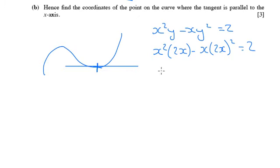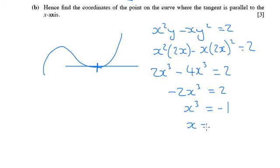So we've got 2x cubed there, take away, this is going to be a 4x cubed equals 2. So that's negative 2x cubed equals 2, which means x cubed is negative 1, which means x is negative 1.